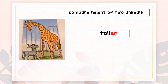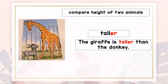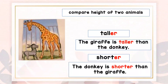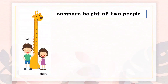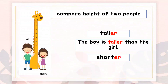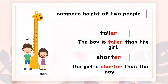Let's compare the height of these two animals. The giraffe is taller than the donkey. The donkey is shorter than the giraffe. We can also compare the height of two people. The boy is taller than the girl. The girl is shorter than the boy.